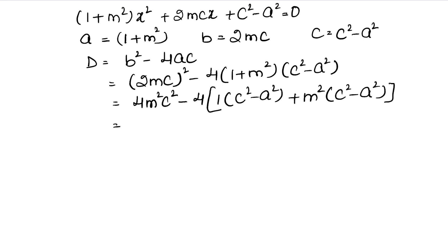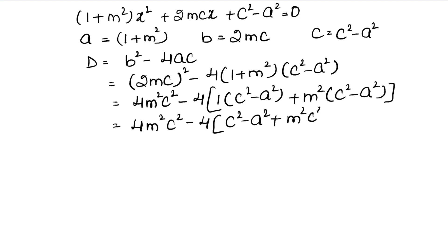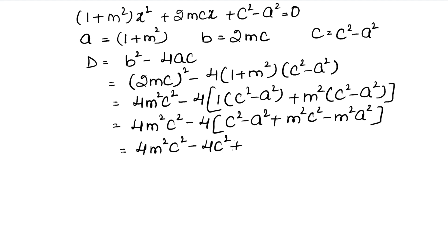Brackets open karne par aagya: c² - a², phir m² ki multiplication (c² - a²) mein. Toh aagya: c² - a² + m²c² - m²a². Ab phir se bracket open karne par: minus 4c², aur minus minus plus toh plus 4a².